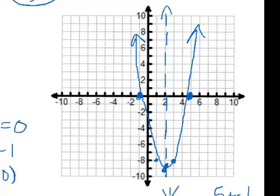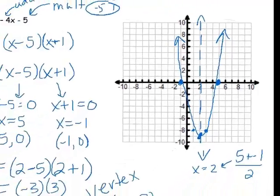So again, we found the 2 x intercepts. We found the middle of those to be the axis of symmetry, and then the vertex had to be on that axis of symmetry. Let's try another one.